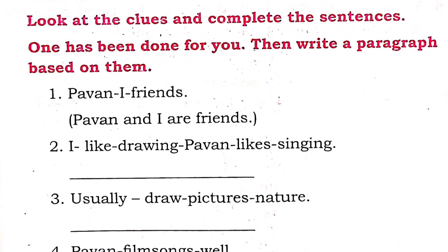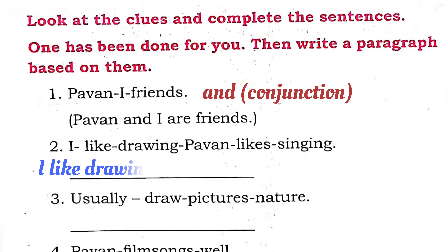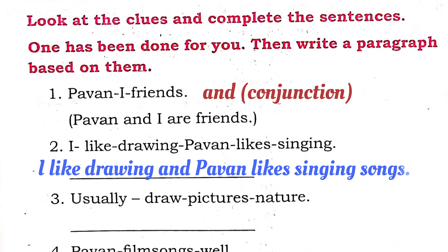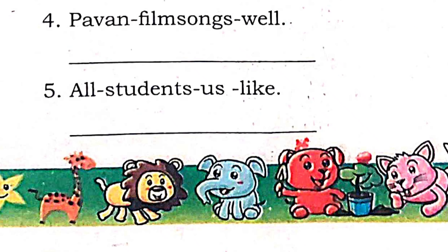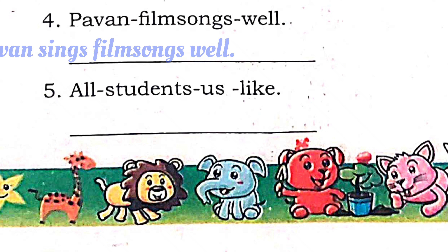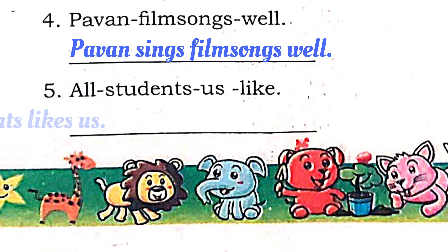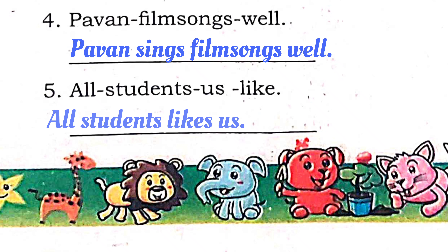Look at the clues and complete the sentences. Bawam and I are friends. I like drawing and Bawam likes singing — add the conjunction 'and': I like drawing and Bawam likes singing songs. Usually I draw pictures of nature. Bawam sings film songs well. All students like us.